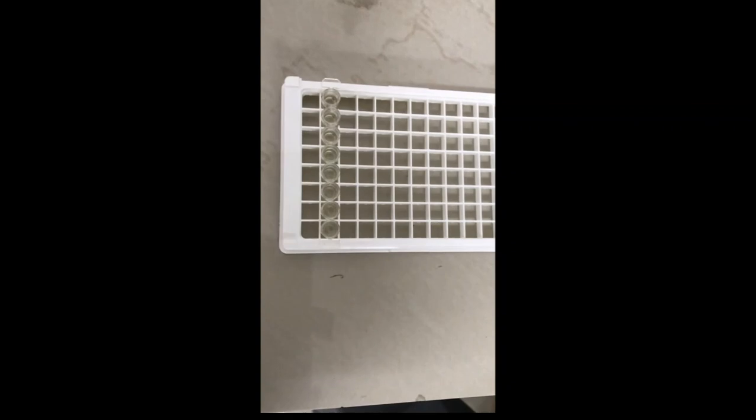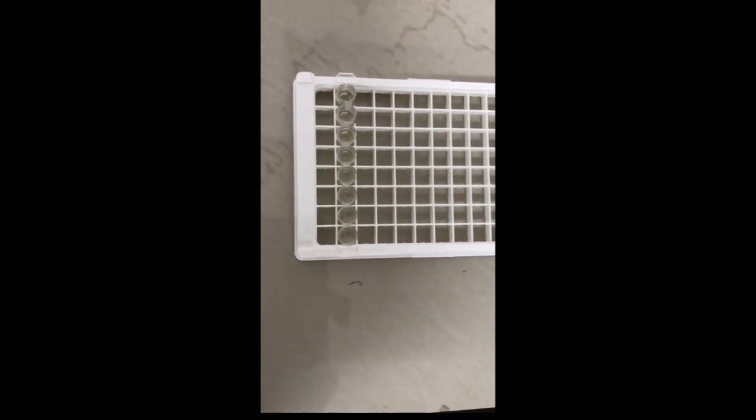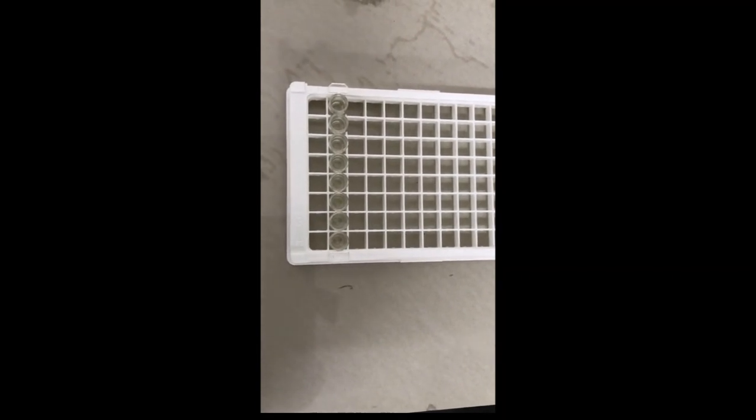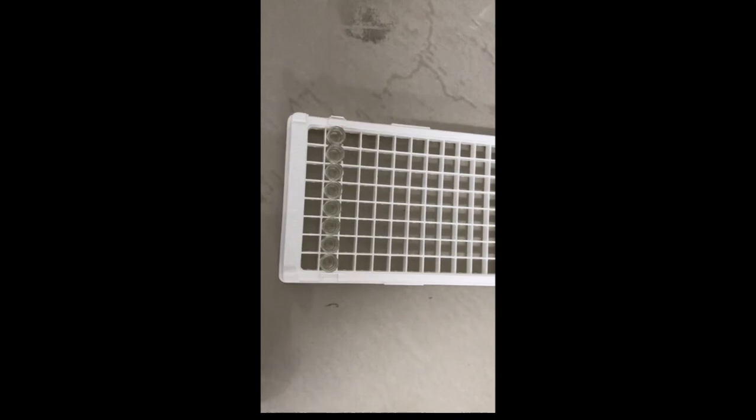After 15 minutes, now we are going to add 50 microliters of stop solution into each of these wells. This is the stop solution for TSH. We are going to use 50 microliters for each.